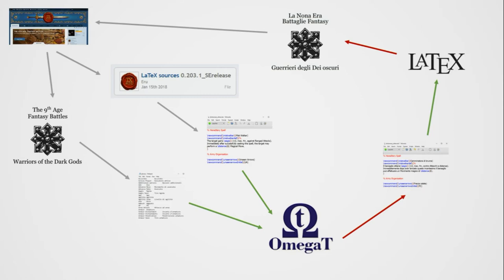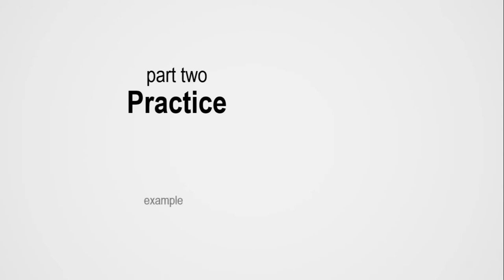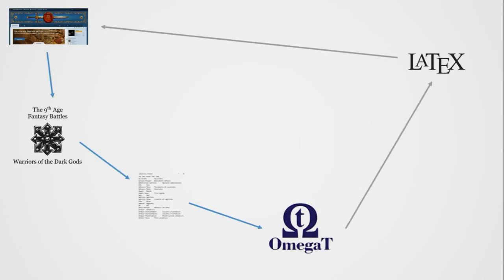That's the overview of the architecture and strategy. Now we're going to focus on the practice, giving three examples of how things are done concretely — looking at the implementation of the procedure, the tactics behind the specific mission of translating one book. The first thing I want to show you is the creation of a glossary that we can put into OmegaT to make translation quicker.